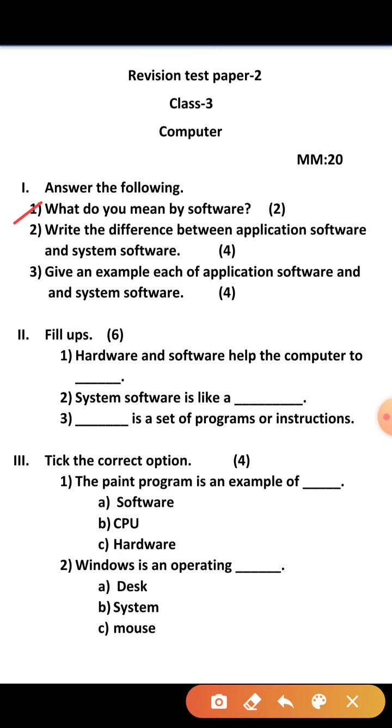That is of two marks. Second, write the difference between application software and system software. That is of four marks: two marks for application software and two marks for system software.